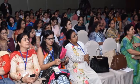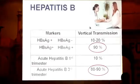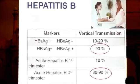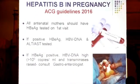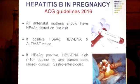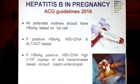Coming on to hepatitis B, the important markers are HBsAg. If HBsAg is positive along with HBeAg, the rate of vertical transmission is as high as 90%. Acute hepatitis B infection in the third trimester also carries a high rate of vertical transmission. All antenatal mothers should have HBsAg tested in the very first antenatal visit. If positive, HBeAg, HBV-DNA, and liver enzymes have to be tested. If HBeAg is positive and HBV-DNA titers are more than 10 to the power of six copies per ml and transaminases are raised, please take a second opinion from your gastroenterologist.